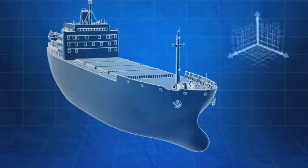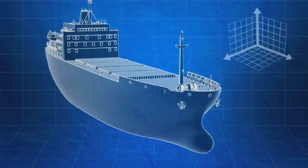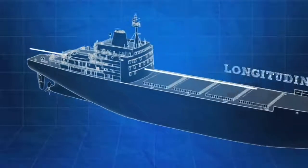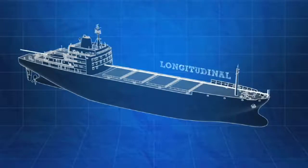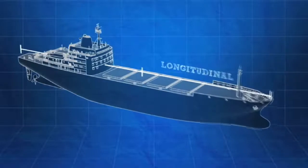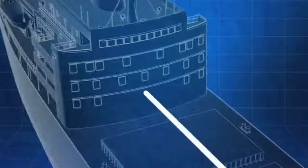Distances onboard ships are measured in one of three directions: longitudinally, transversely, and vertically. Longitudinal is the horizontal direction along the length of a ship. Longitudinal distances are measured from one of three places: the forward perpendicular, the aft perpendicular, or midships. Where longitudinal measurements are taken from will vary from ship to ship.